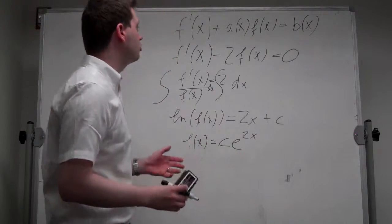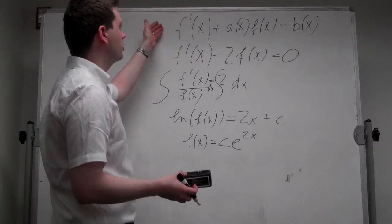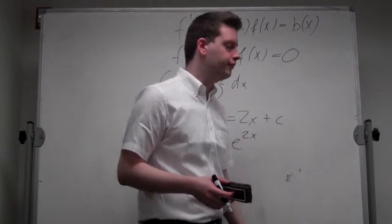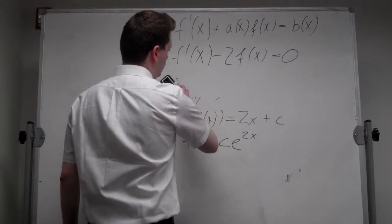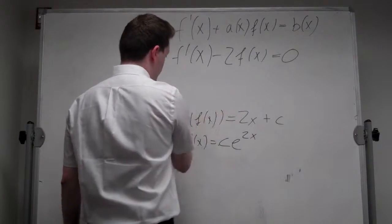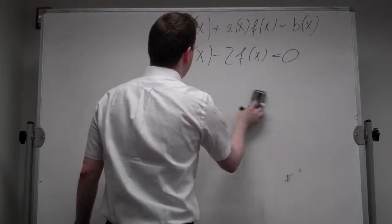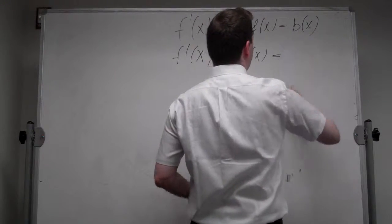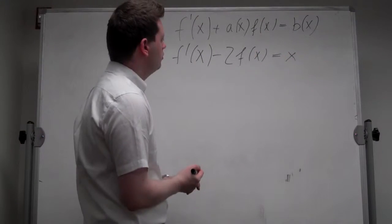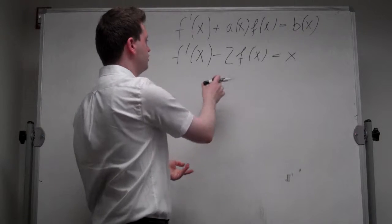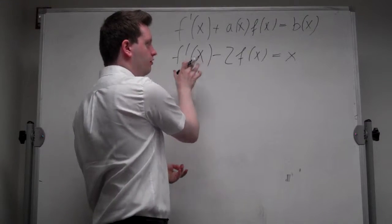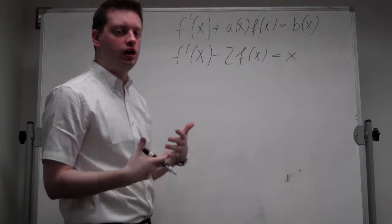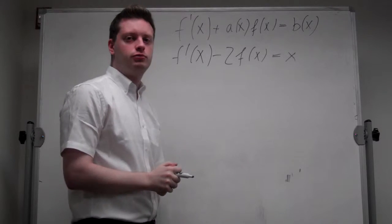Now let's go to the general case where b of x is not equal to zero. For simplicity I leave the left-hand side the same and just add an x on the right. Unfortunately, we can no longer bring it into the simple form of f prime over f, so we need to employ a different algorithm.